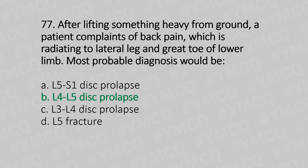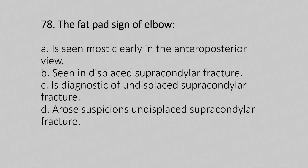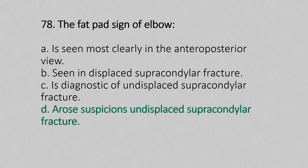Now let's move to question number 78. The fat pad sign of the elbow: Option A, Is seen most clearly in the anterior-posterior view; Option B, Seen in displaced supracondylar fracture; Option C, Is diagnostic of undisplaced supracondylar fracture; Option D, Arouses suspicion of undisplaced supracondylar fracture. And the answer is Option D, Arouses suspicion of undisplaced supracondylar fracture.